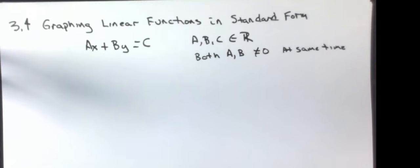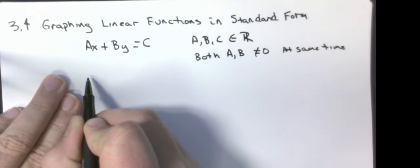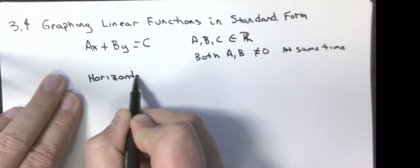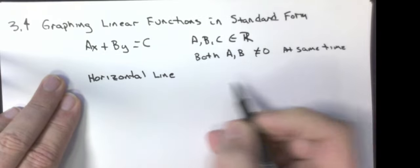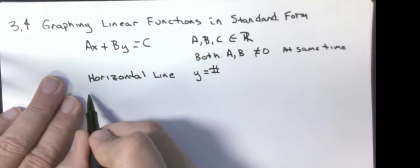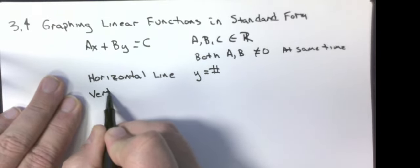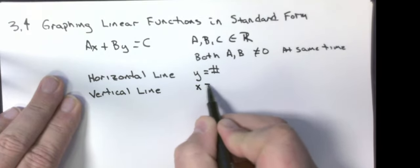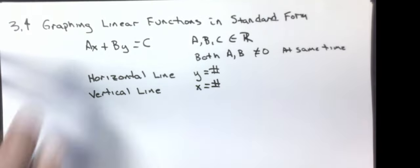One thing I want to remind you is that the equation of a horizontal line is just Y equals some number, and the equation of a vertical line is any time you just end up with X equaling some number. Any other time when you have Ys and both Xs in there, you're going to end up with some sort of diagonal line.